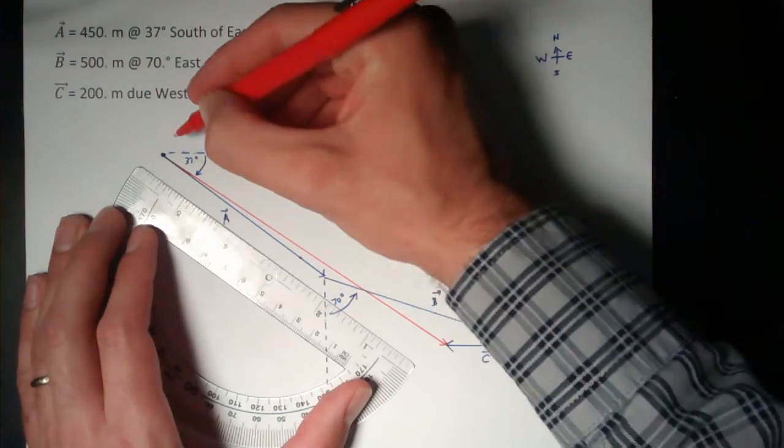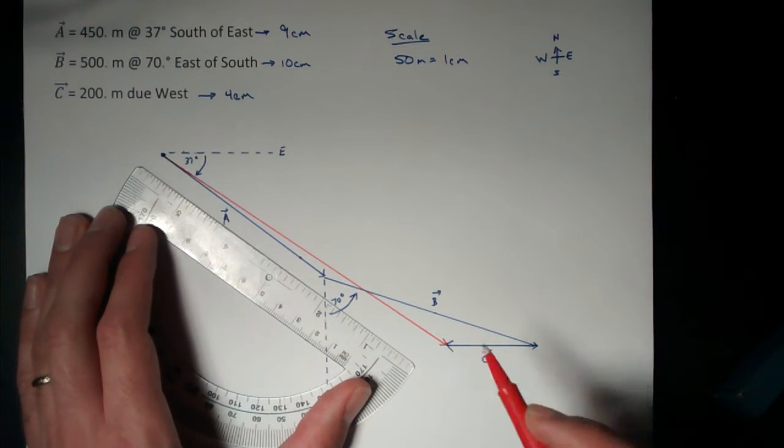And remember, the resultant goes from the starting point to the ending point, so make sure you have your arrowhead down here.